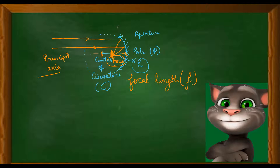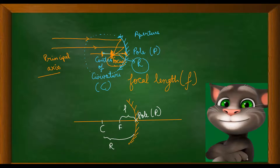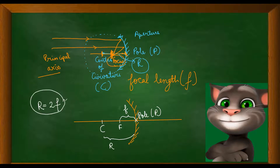Let us have a neat and clean picture of all these terms. This is our convex mirror. This is the principal axis. This point is the pole, capital P. This is the focus, capital F, and this is the center of curvature, capital C. This is the radius of curvature and this is the focal length, small f. There is a relationship between radius of curvature and focal length: the radius of curvature is two times the focal length of the mirror — R equals 2f.